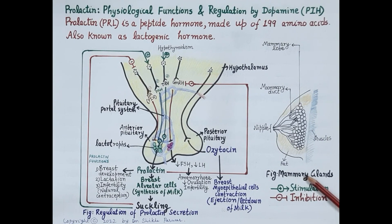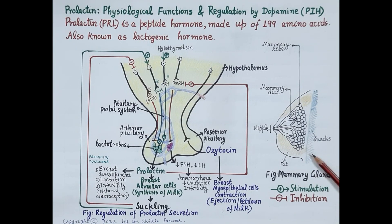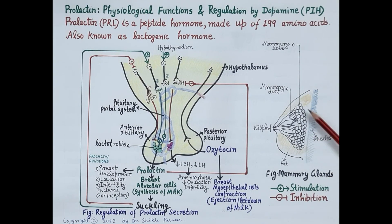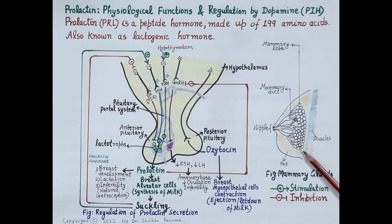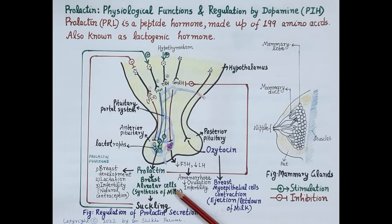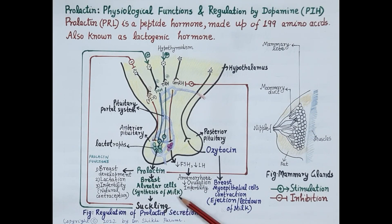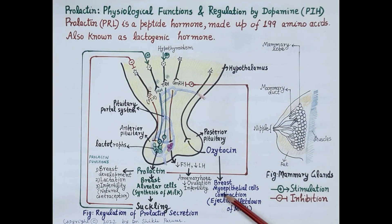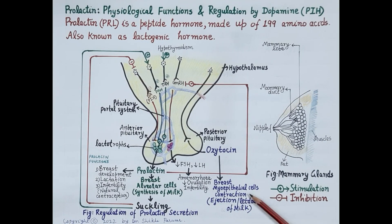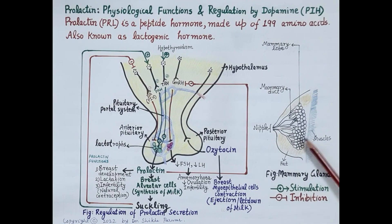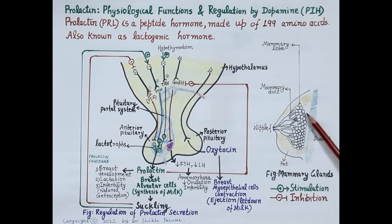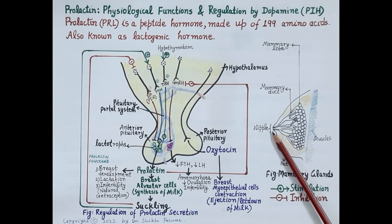To understand the functions of prolactin, let us discuss the anatomy of the mammary gland or breast. Each breast is made up of a number of glandular structures called lobules. Lobules consist of alveolar cells where milk is synthesized, and also myoepithelial cells. Contraction of myoepithelial cells causes release — or let down — of milk from the lobules. These lobules open into tiny ducts that drain towards the nipple, from where the milk is sucked by the baby.